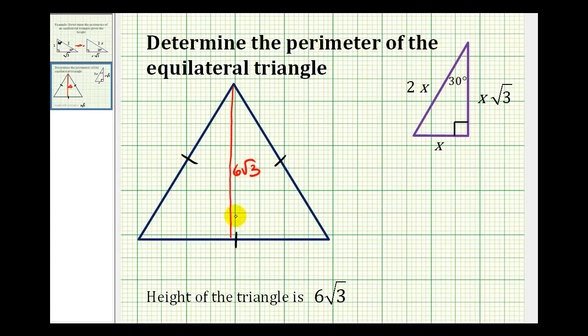Notice how it divides the equilateral triangle into two 30-60-90 triangles. This would be 30 degrees, this would be 60 degrees, and this is our right angle.